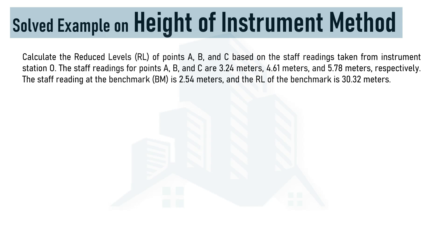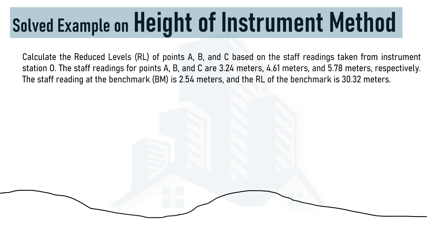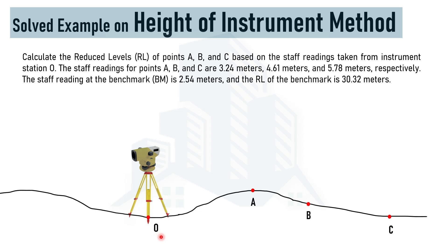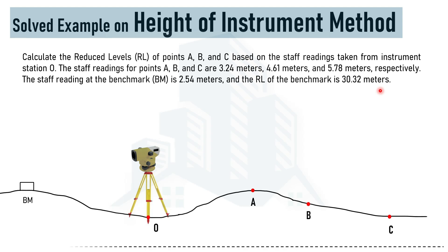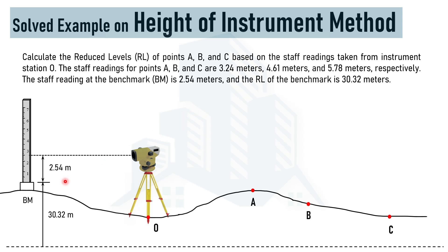Before solving, let's sketch the scenario. Consider this surface where the instrument is placed at point O, and the three points along with the benchmark are observed. The benchmark is located here, and its reduced level — measured from a datum — is 30.2 meters. Placing the staff at the benchmark gives a staff reading of 2.54 meters.